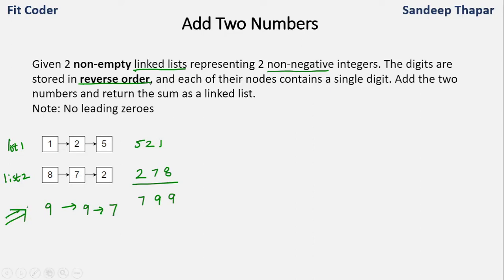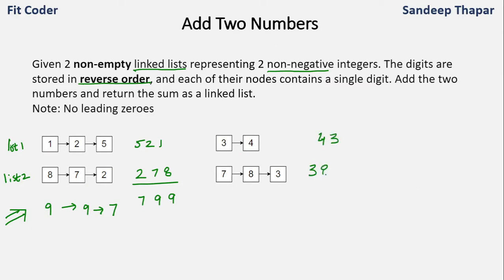Let's take one more example. The numbers we are given are 43 and 387. If we add these two numbers we get 430, so the output in this case will be 0 3 4.